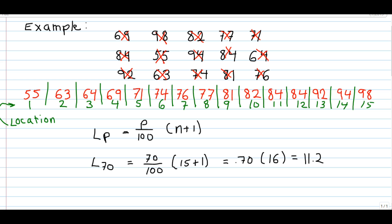It's important to understand that 11.2 is not the 70th percentile, but rather the location of where the 70th percentile would be. So the 70th percentile would be someplace just above the 11th value. This value, 11.2, is the location — somewhere between the 11th and the 12th number.